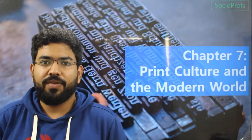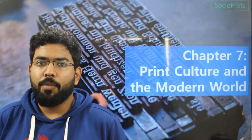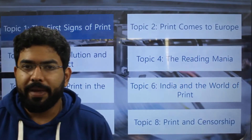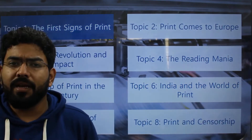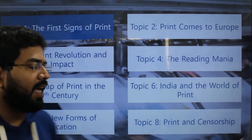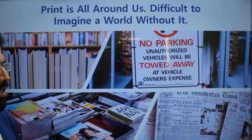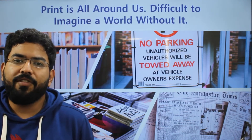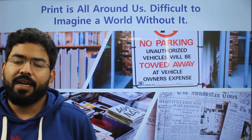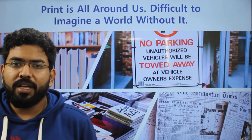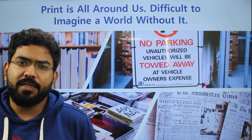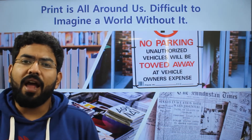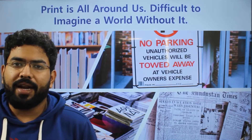Hi guys, welcome to the first video on the chapter 'Print Culture and the Modern World.' We have divided this chapter into eight topics. In the first topic, we'll be discussing the earliest signs of print. In these days, we live in a world where everything around us is printed — books, magazines, newspapers, pamphlets. We are surrounded by the printed world.